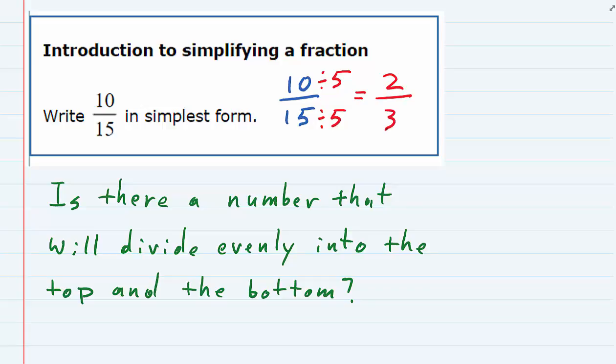And we would continue until we can't think of any other numbers that divide evenly into both of the numbers other than 1. And that's where we're at now. 2 and 3, the only number that divides evenly into both of them is 1. So we have simplified it as far as we can.